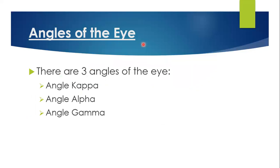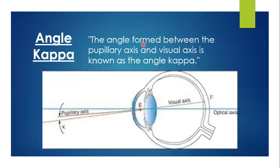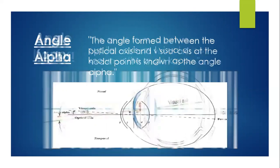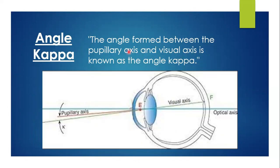The angles of the eye are three. I have already told you that they are angle Kappa — or Kappa according to some languages — angle Alpha, and angle Gamma. Angle Kappa is the angle formed between the pupillary axis and the real axis. The angle that is formed between the pupillary axis and the real axis.